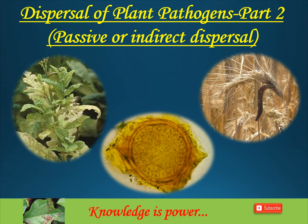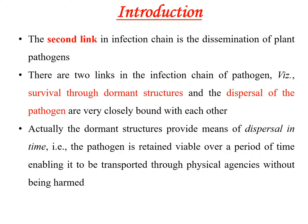In my previous lecture, I covered direct dispersal of plant pathogens. Dissemination or dispersal of plant pathogens is the second link in the infection chain. There are two links: first, survival through dormant structures, and second, dispersal of plant pathogens. These two links are very closely bound with each other.